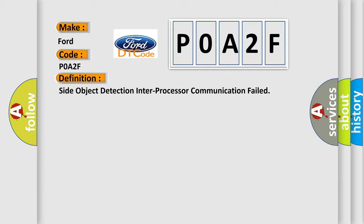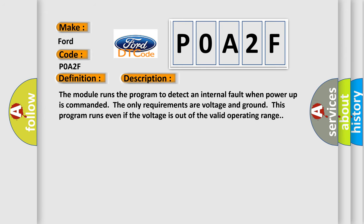And now this is a short description of this DTC code. The module runs the program to detect an internal fault when power-up is commanded. The only requirements are voltage and ground. This program runs even if the voltage is out of the valid operating range.